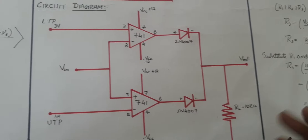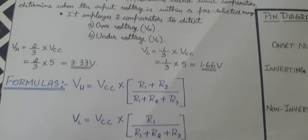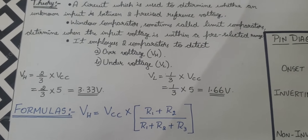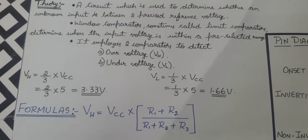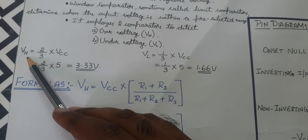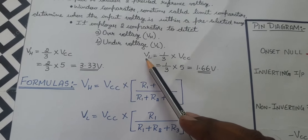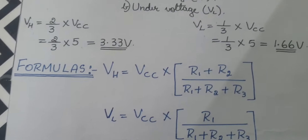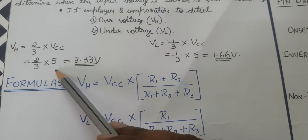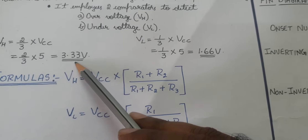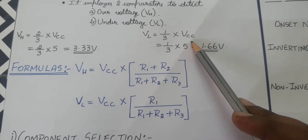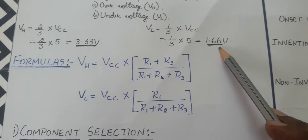Before demonstrating the circuit diagram, we will go through the theoretical part. The experiment is given with two reference voltages: VH (high voltage) and VL (low voltage), which correspond to UTP and LTP. To calculate VH, the formula is (2/3) × VCC. With VCC = 5V, VH = 3.33 volts. VL is (1/3) × VCC, so VL = 1.66 volts.